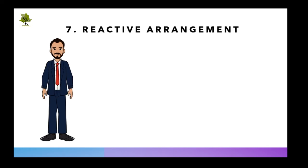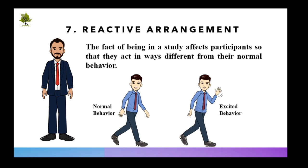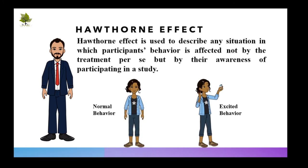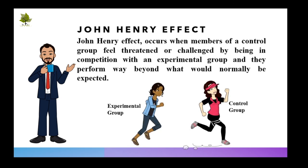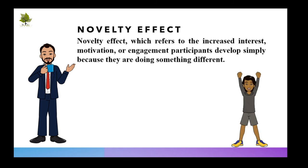The reactive arrangement is the fact of being in a study that affects participants so that they act differently from their normal behavior. Reactive arrangements, also called participant effects, are threats to validity associated with the way a study is conducted and the feelings and attitudes of participants. The Hawthorne effect describes any situation in which participants' behavior is affected not by the treatment per se but by their awareness of participating in a study. The John Henry effect occurs when members of a control group feel threatened by competition with an experimental group and perform way beyond what would normally be expected. Another reactive arrangement is the novelty effect, which refers to the increased interest, motivation, or engagement participants develop simply because they are doing something different.